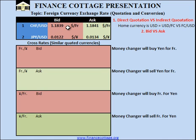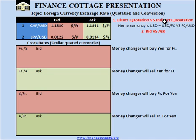Since the dollar is the home currency in the United States, this quotation is the direct quotation for the United States. On the other side, 1.1839 dollars per franc is the indirect quotation for Switzerland. The difference between direct and indirect quotation is that they are reciprocals of each other.